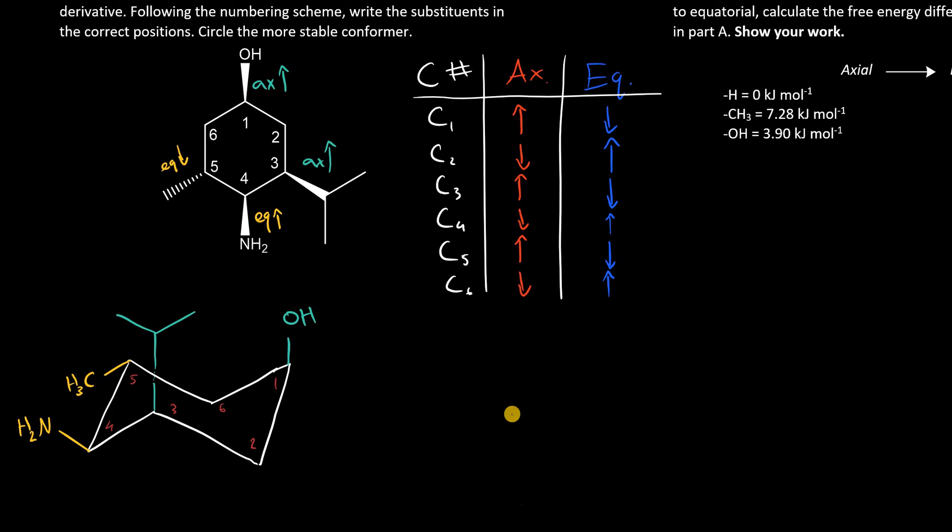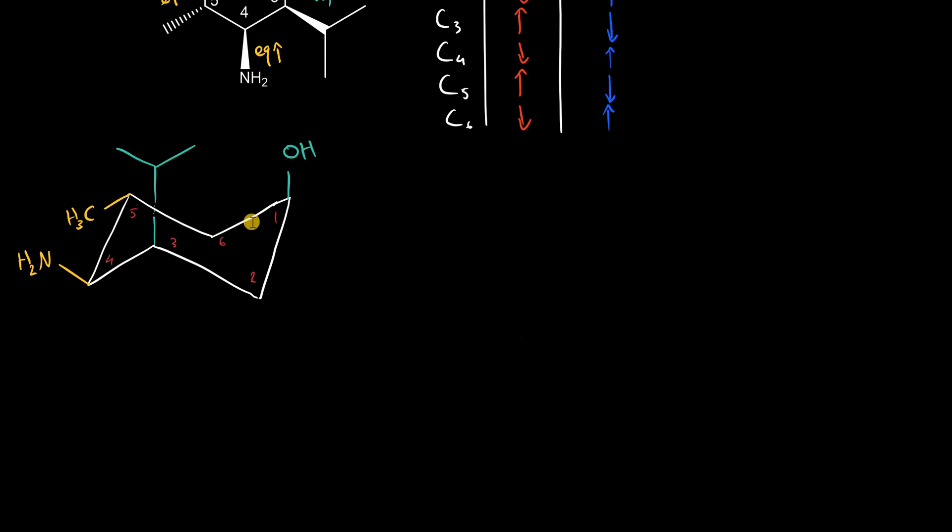And there's our structure. Before we move on to the next one, I do want to tally up what we have so far. So our axial substituents are the OH group and the isopropyl, and our equatorial substituents are the NH2 group and our methyl.